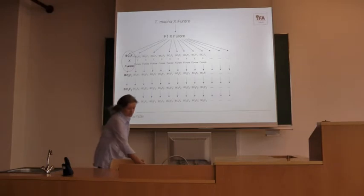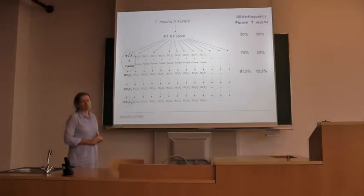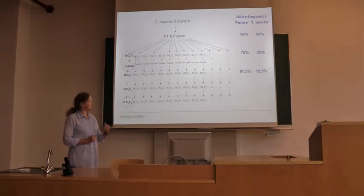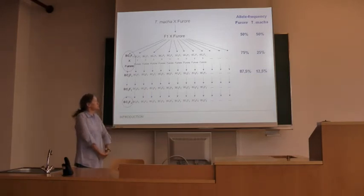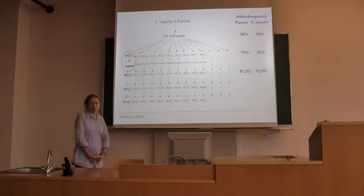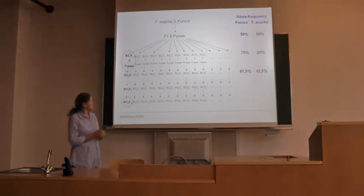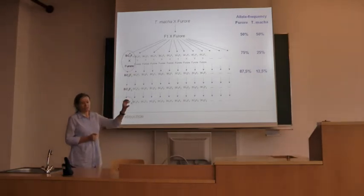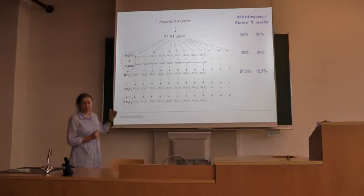By doing those two back-crosses, the genome contribution of Chororola increases and that of the exotic material decreases. You normally choose such designs when you perform crosses with exotic materials which have lots of unwanted traits, so that your lines in the population have most — not all — of the genome in common.